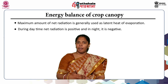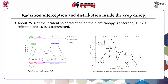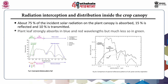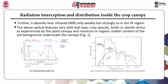Regarding radiation interception and distribution inside the crop canopy: about 75% of incident solar radiation on the plant canopy is absorbed, 15% is reflected, and 10% is transmitted. The plant leaf strongly absorbs in blue and red wavelengths but much less in green, and absorbs near-infrared only weakly but strongly in the infrared region. These optical features vary with leaf type, crop species, biotic or abiotic stresses, and moisture or organic matter content of the soil background beneath the canopy.